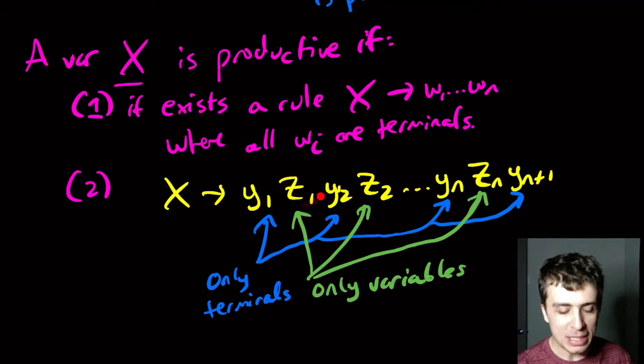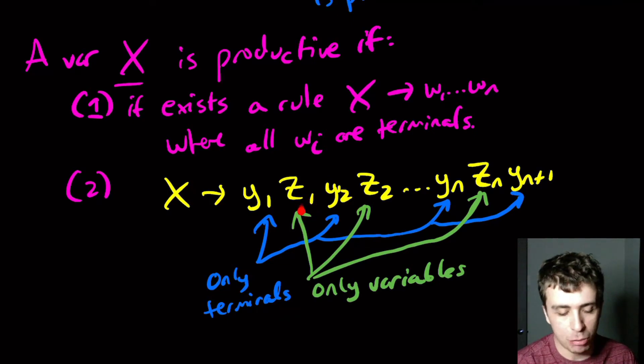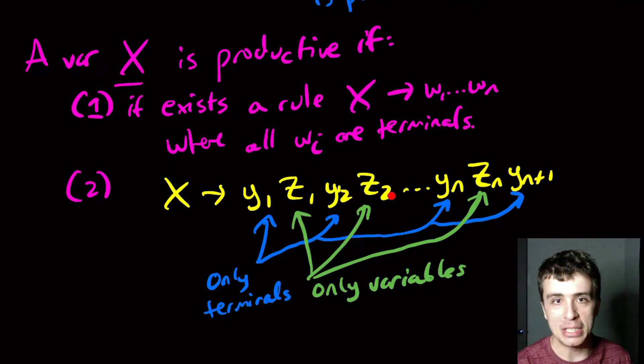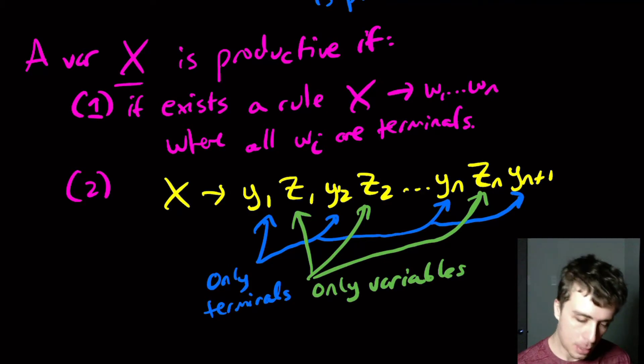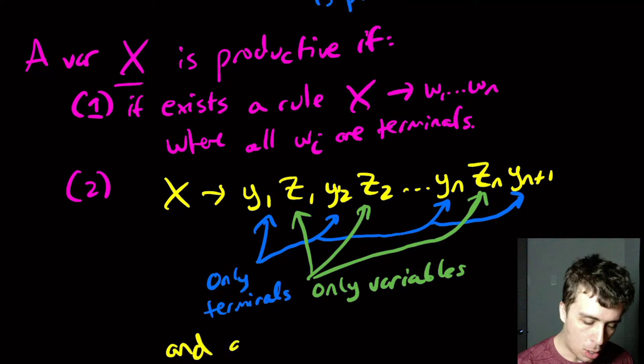Okay, so this is actually the form of any rule at all. Note that this is not a single variable, but this is just a bunch of variables. Or maybe we could augment this with these could be, these are single variables. So the z's are single variables here. And the y's could be any number of terminals. There is a way to actually formalize any rule in a grammar like that. So let's say that the z's are single variables.